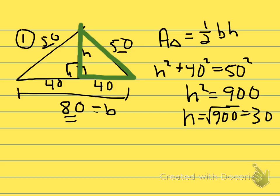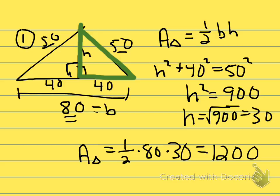That means h will be the square root of 900 will be 30. Once we have our height, now we can get the area of the triangle. The area of this triangle is one half of its base, which is 80, times the height, which is 30, that we just figured out. And that will be 1200 square units.